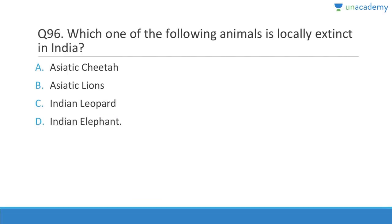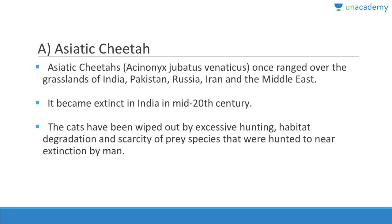Question 96: The locally extinct animal in India is the Asiatic cheetah (Acinonyx jubatus venaticus). Asiatic lions are found in Gujarat, Indian elephants and leopards are still present. The Asiatic cheetah once ranged across grasslands of India, Pakistan, Russia, Iran, and the Middle East but was wiped out by excessive hunting by the British and princes of princely states, plus habitat destruction and prey scarcity.